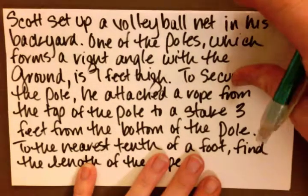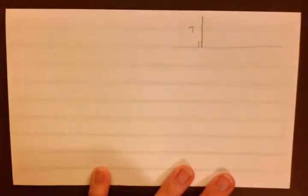Okay, so let's go ahead and reread and draw a little picture. I always find that helps me when I can see what we're actually doing here. What it says is that one of the poles forms a right angle with the ground and is seven feet high. So let's go ahead and draw the ground here. We know that this pole forms a right angle and it's seven feet high.